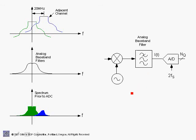Another reason for going digital is that when we implement a filter in the digital domain we do not have the same problems with precision, matching, large area, or high power consumption as in the analog domain. So there is good reason to implement an analog baseband filter that provides just enough rejection of the adjacent channel so that when we sample the signal in the ADC process we avoid aliasing.